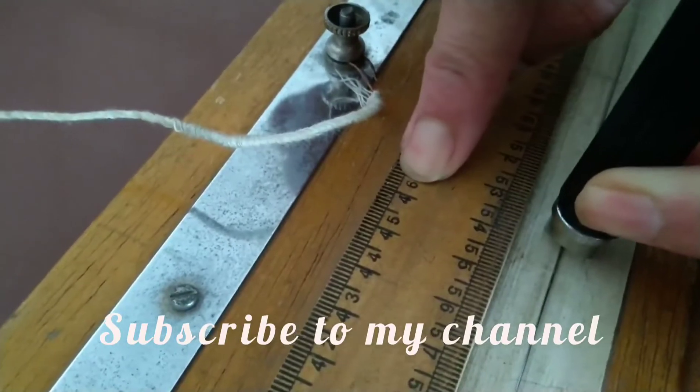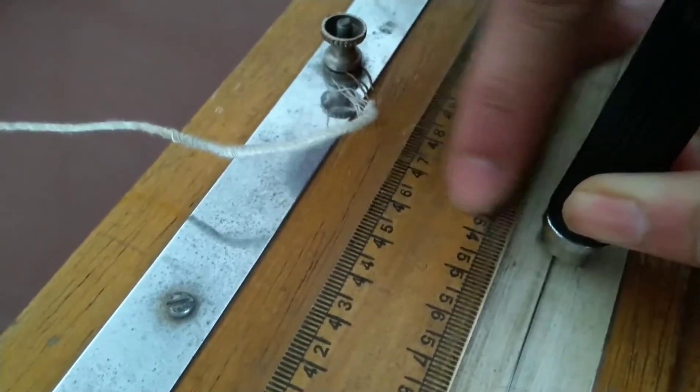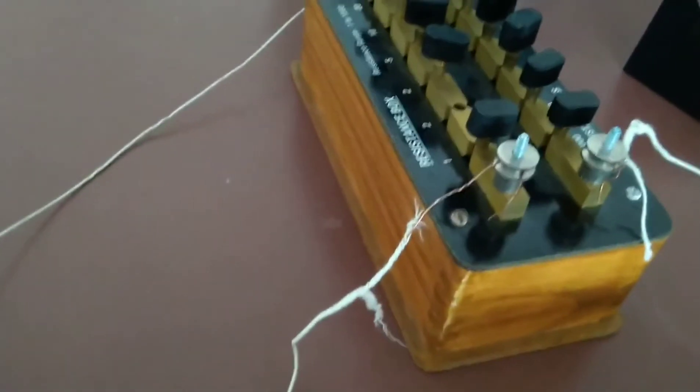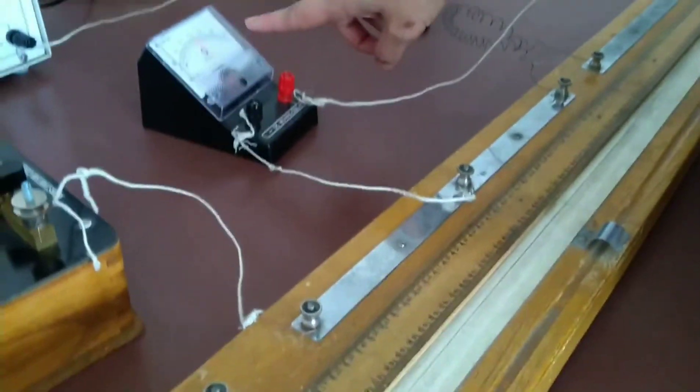Our null point is formed at 46.5 with the 2 ohm resistance. Then by changing this resistance we keep on noting the null point with this zero value.